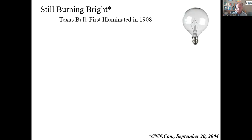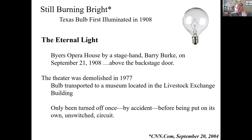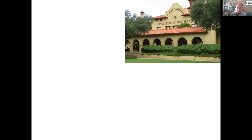The opera house was demolished in 1977, so the bulb was moved to a museum in a livestock exchange building. If you look up the livestock exchange and you've been there, you can actually see this light bulb — it's still lit. It's been on for 115 years. That's amazing — 115 years for a 40-watt light bulb. And I was thinking: well, how much energy would it take to keep that light bulb lit for 115 years? The reason I chose this is because in thermodynamics, we're looking at the transfer of energy — the movement of energy into and out of systems.